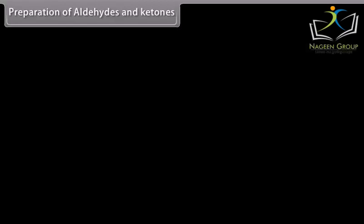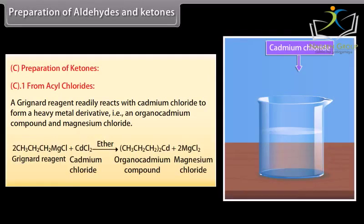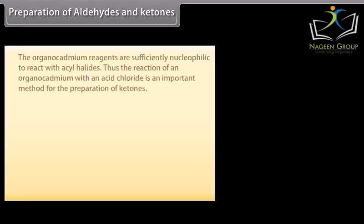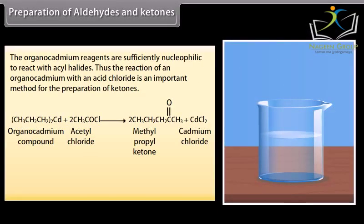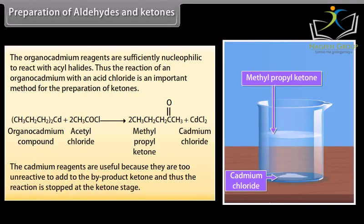Preparation of ketones. From acyl chlorides: a Grignard reagent readily reacts with cadmium chloride to form an organocadmium compound and magnesium chloride. The organocadmium reagents are sufficiently nucleophilic to react with acyl halides. Thus, the reaction of an organocadmium compound with an acid chloride is an important method for the preparation of ketones. The cadmium reagents are useful because they are too unreactive to add to the product ketone, and thus the reaction is stopped at the ketone stage.